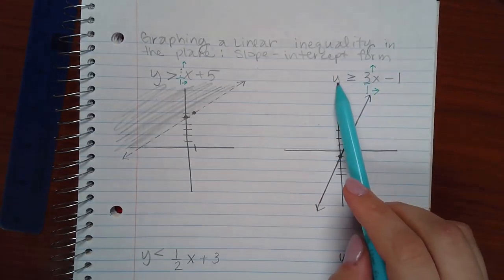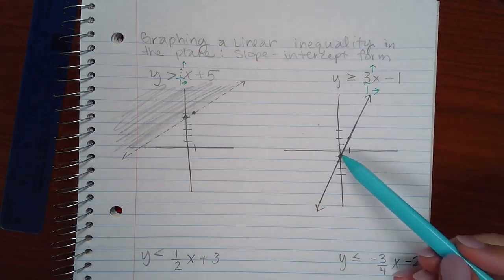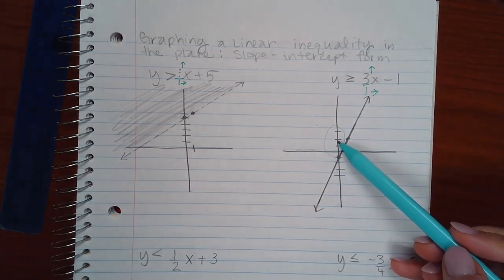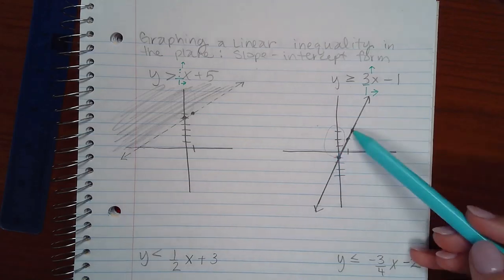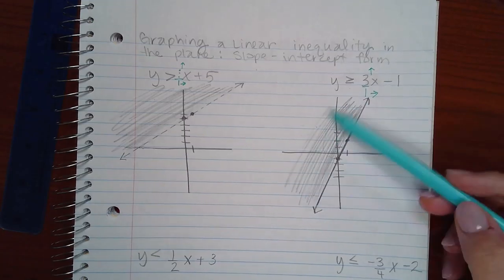And then now, I want to shade the y values that are greater than this line. These y values are above the line. Which means these y values are greater than the line. So I will be shading this side of the graph.